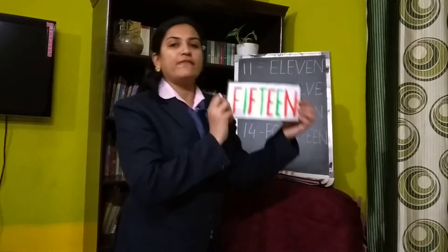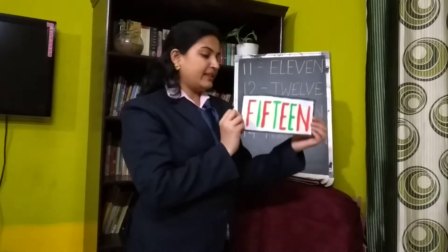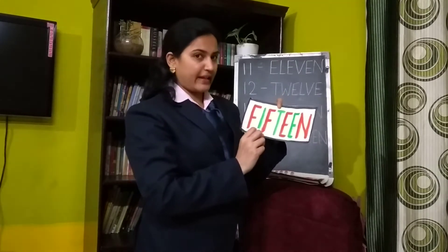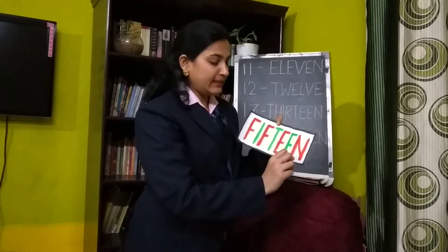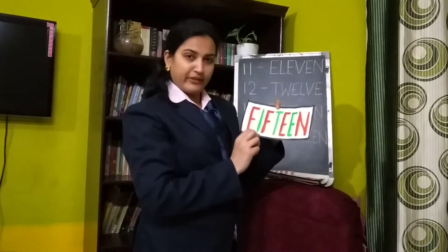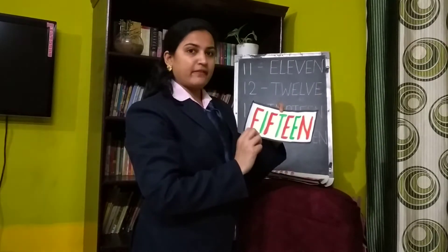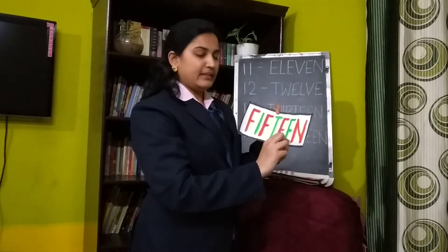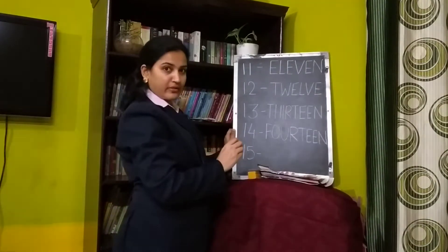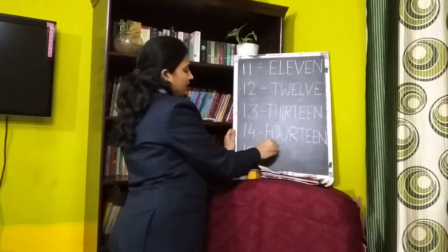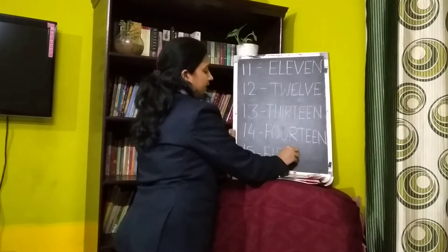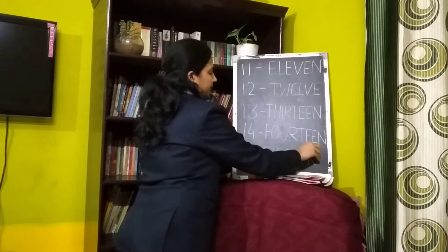Next number is fifteen. This time we don't write five plus teen — it's not 'fiveteen.' It's fifteen: F-I-F-T-E-E-N. In fifteen we write 'fif' first, then teen. F-I-F-T-E-E-N. 15.